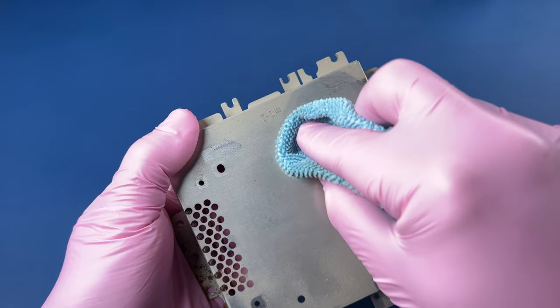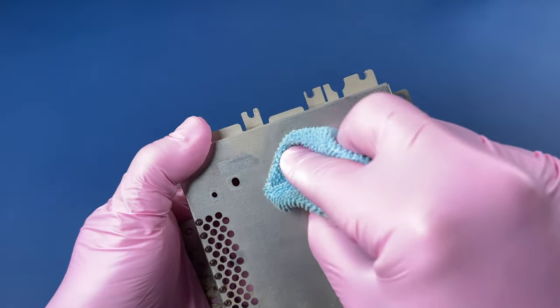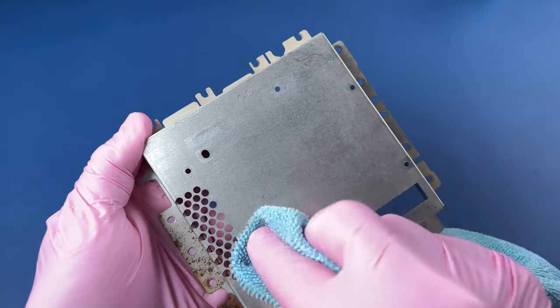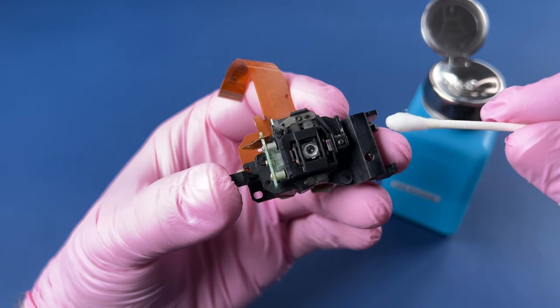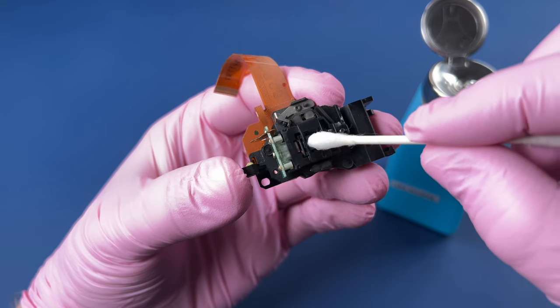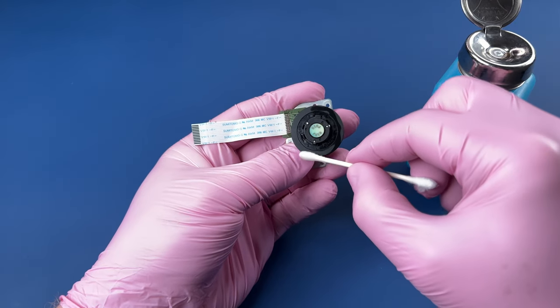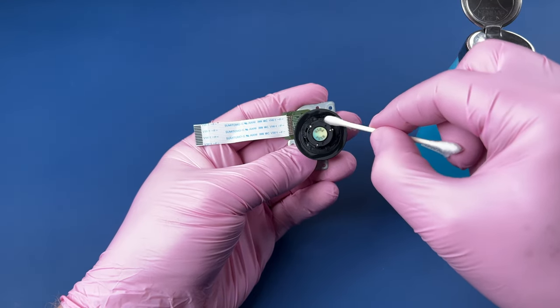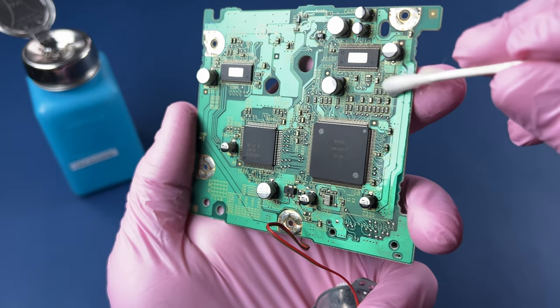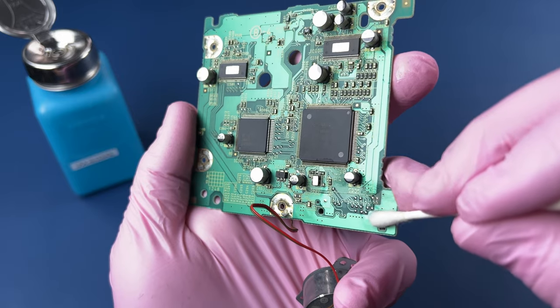I'm just going to use a dry cloth here to wipe the dust off of these metal parts. I don't want to get them wet, especially with the rust that's already started to build up on some of them. I want to be very careful with this Q-tip and a little bit of isopropyl alcohol. Just dab this lens off and try to make sure it's clean.